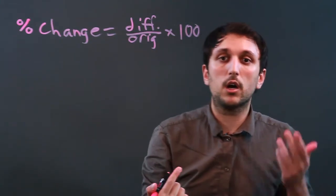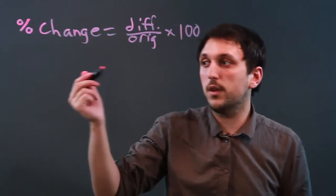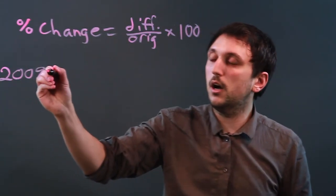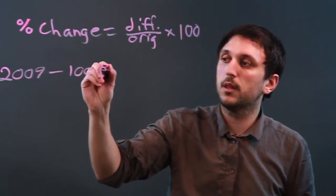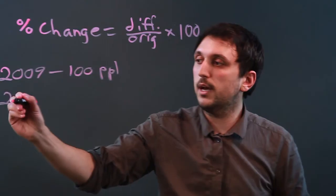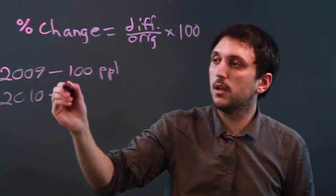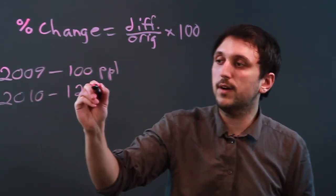Let's say we're talking about population growth from one year to the next. In 2009 your building has 100 people and in 2010 there were 125 people.